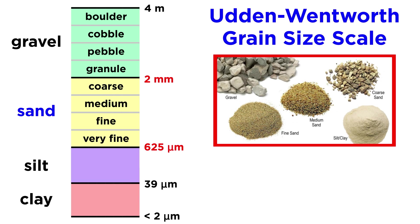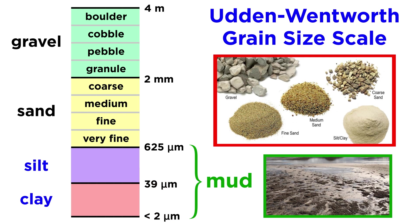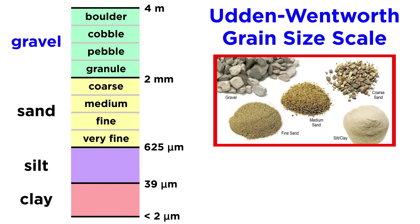Sand ranges in size from 625 microns to 2 millimeters. Smaller than sand is silt, which ranges from about 39 to 625 microns. And even smaller yet is clay, which can be as small as a single clay crystal. Sometimes geologists combine the silt and clay portion of a rock and call it mud. Larger than sand is gravel, and it is broken down into several subgroups: granule, pebble, cobble, and boulder, from smallest to largest.